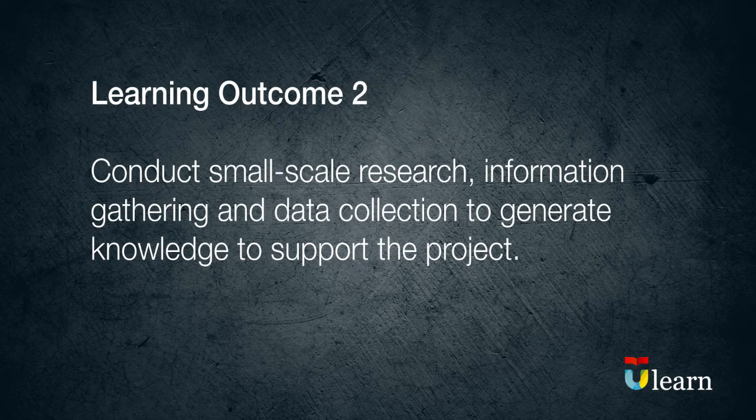To meet Learning Outcome 2, you need to conduct small-scale research, information gathering and data collection to generate knowledge to support the project. This is the start of the project execution phase. You need to decide on your research methodology, including selecting your survey sample and your approach to sampling. Then you need to conduct some secondary and primary field research, taking account of factors like research ethics, reliability and validity. Then you need to analyse your data.